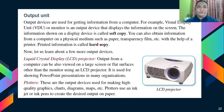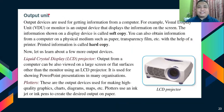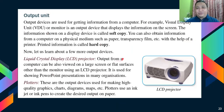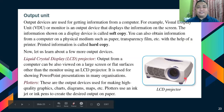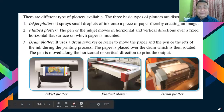We're done with the CPU. We're now at the output unit. Examples include projectors — this is an LCD projector — and plotters, which are large printers such as inkjet plotters, flatbed plotters, and drum plotters.